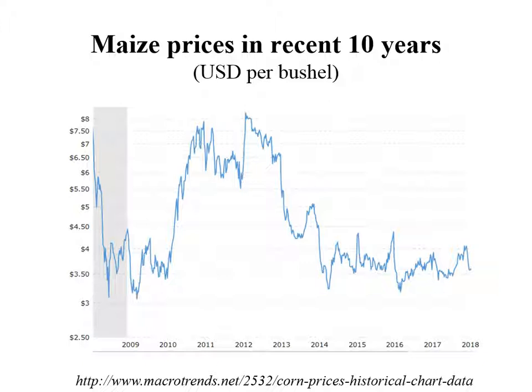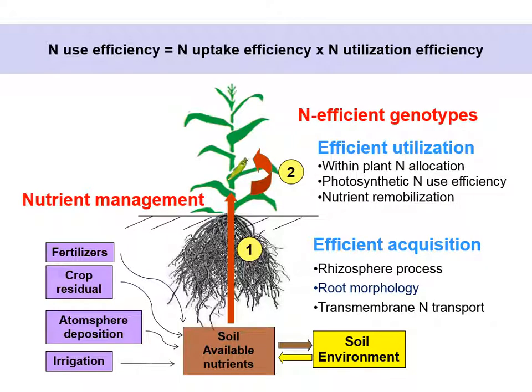Farmers would like to get more yield with less input. That means we have to increase nitrogen use efficiency in maize. There are two principal ways: one is by improvement of nutrient management, and the second is to use naturally efficient genotypes.